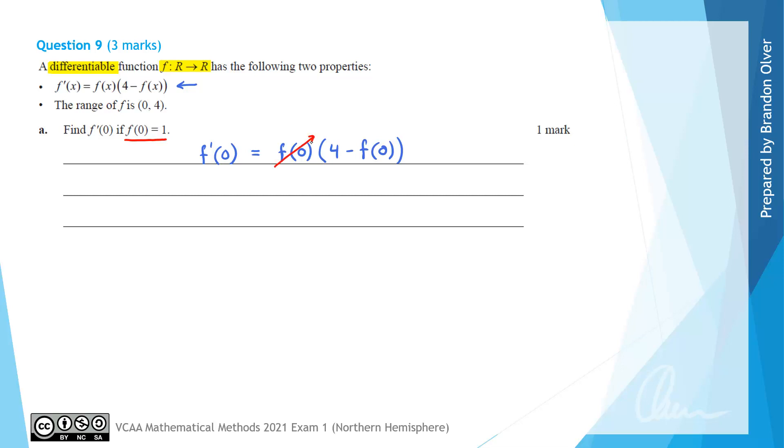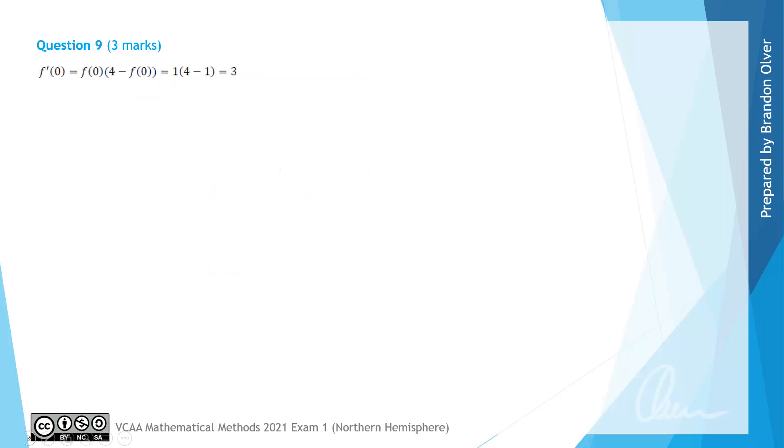So f(0) being 1, we can replace that with 1 and that with 1. So therefore, f'(0) is really just equal to 1 multiplied by 4 minus 1. So therefore, f'(0) is simply 1 times 3. So the answer to this question is that f'(0) is equal to 3. So that is the answer to part A of this question. From the examiner's report, we can just see that they got the same answer as we did.